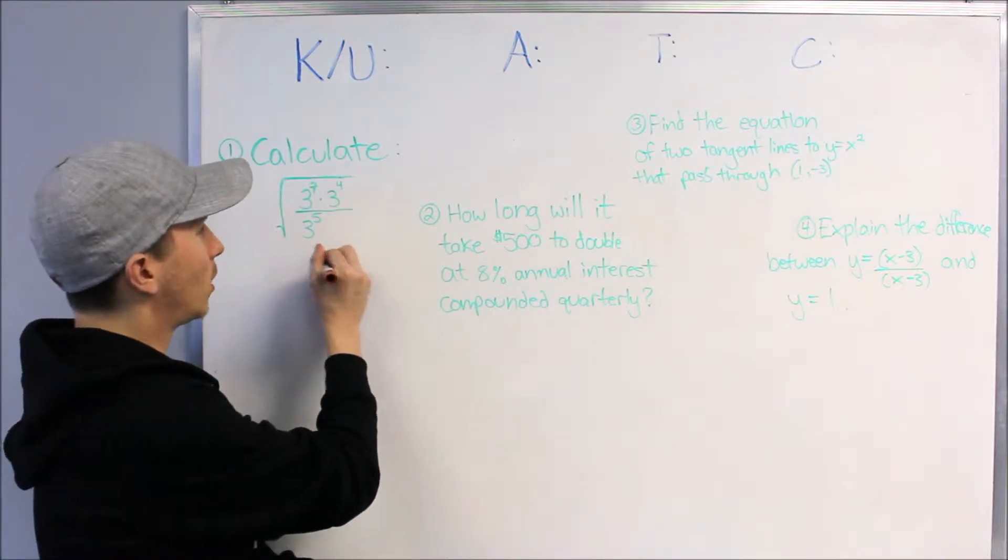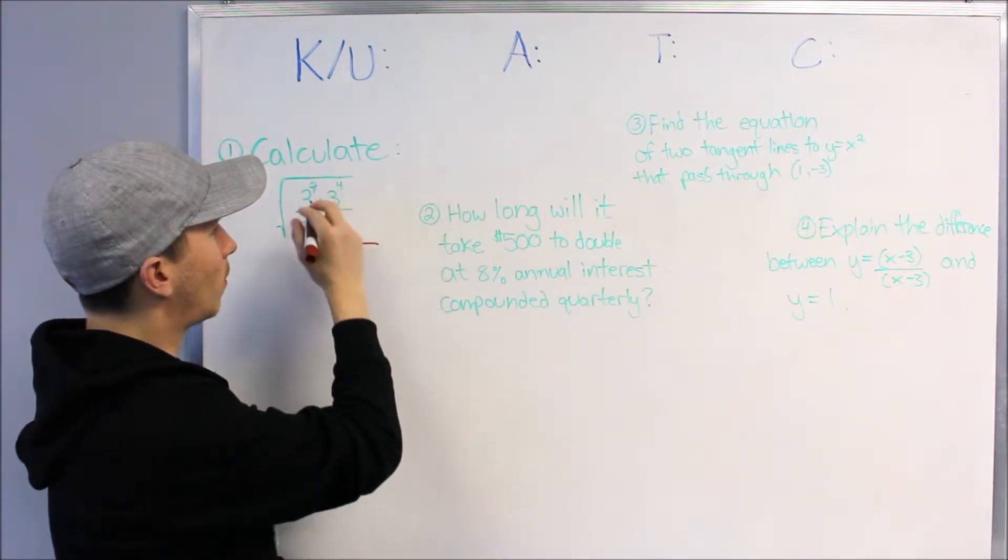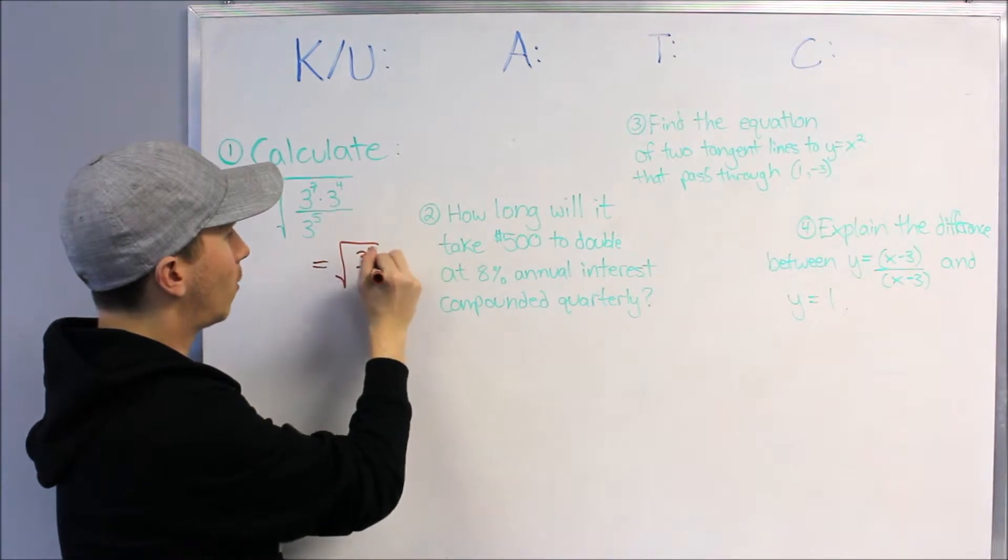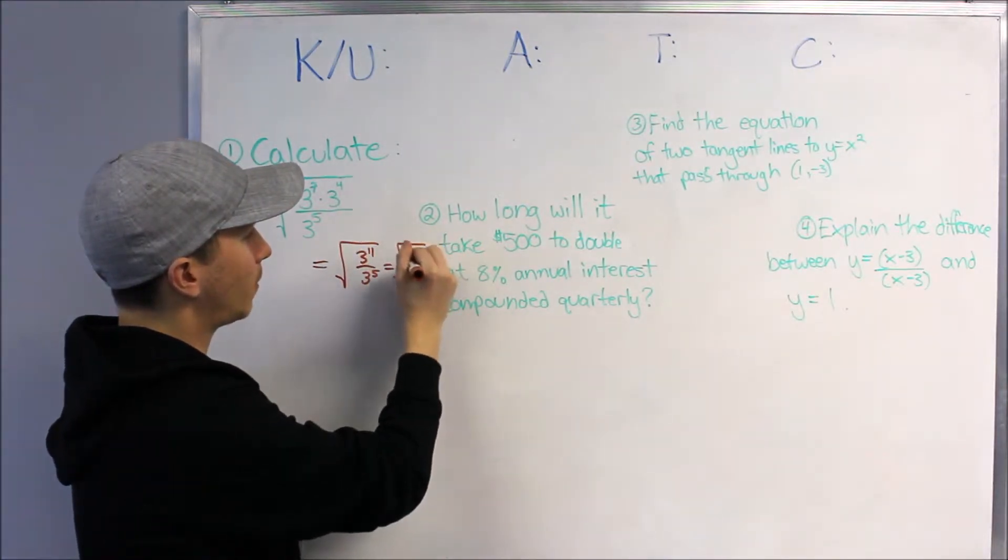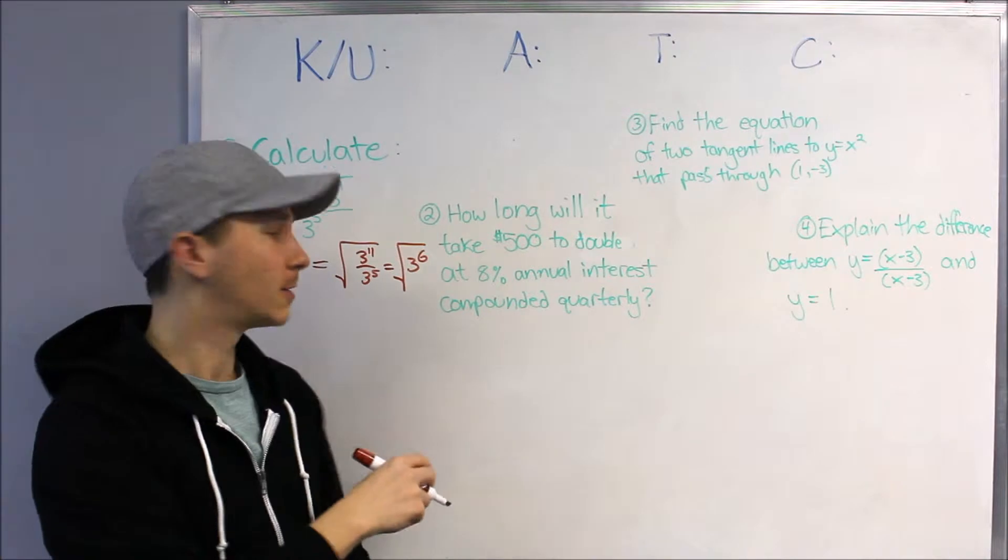But if you know your exponent rules, we can just simplify the inside of the square root. That's 3 to the 11 over 3 to the 5, which is the square root of 3 to the 6, because we can subtract.